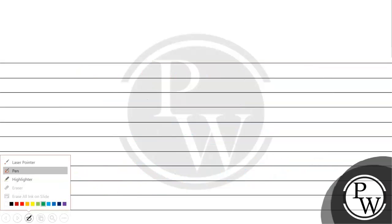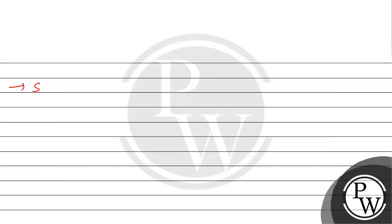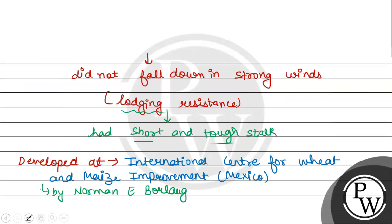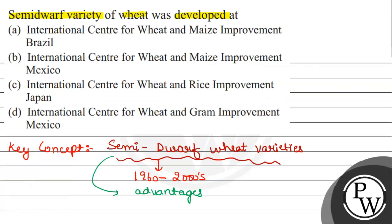Some examples of semi-dwarf wheat varieties are Sonalika and Kalyan Sona, etc. So we got the answer to our question. The question asked where semi-dwarf wheat varieties were developed, and our answer is the International Center for Wheat and Maize Improvement, Mexico — which is Option B.